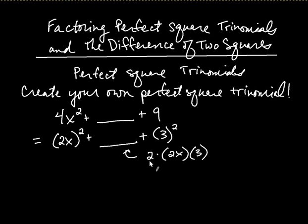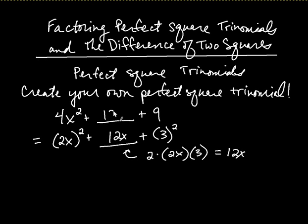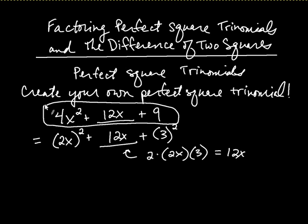It's always 2 multiplied by whatever you get after you identify what's being squared. And what's that equal to? Well, 2 times 2x is 4x, times 3 is 12x. So you put a 12x in the middle there, and that's the end of the game. We just created our own perfect square trinomial.